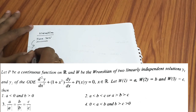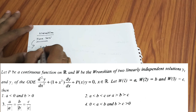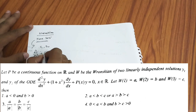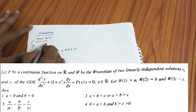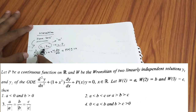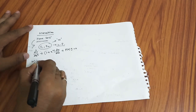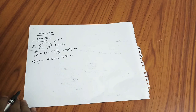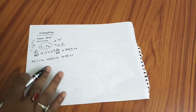The problem says: let P be a continuous function on R and W be the Wronskian of two linearly independent solutions y1 and y2 of the differential equation d²y/dx² + (1 + x²) dy/dx + P·y = 0. Extra conditions are also given: W(1) = a, W(2) = b, and W(3) = c. All four options are related to a, b, and c, so be careful.